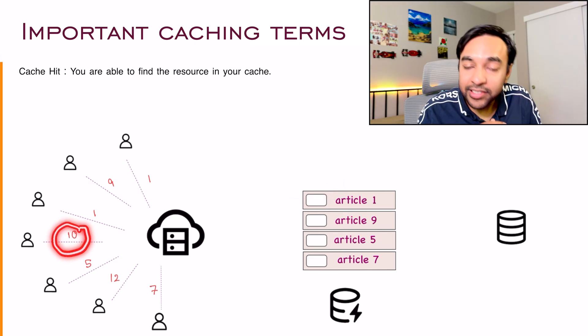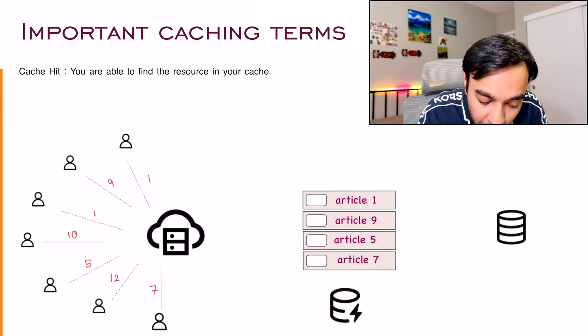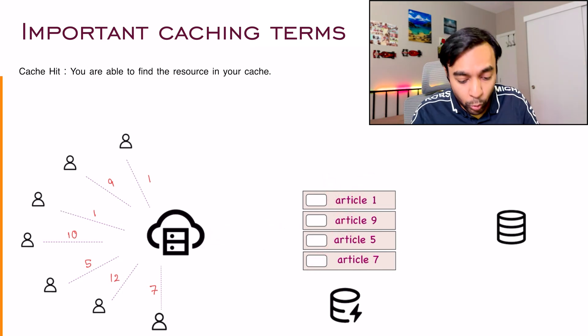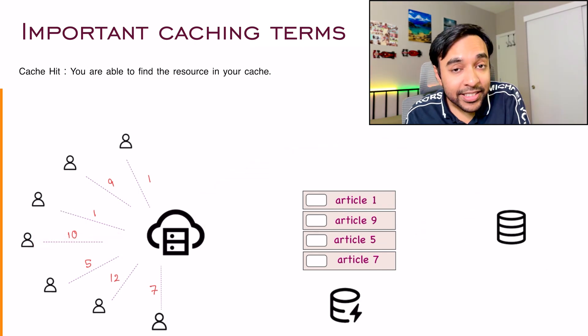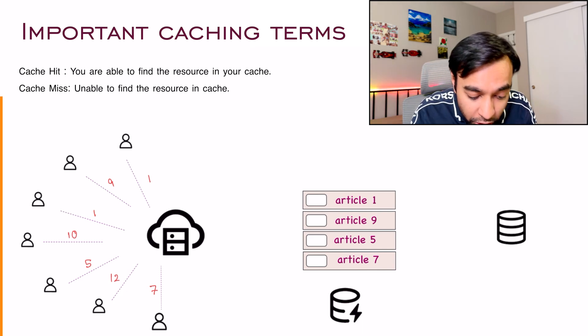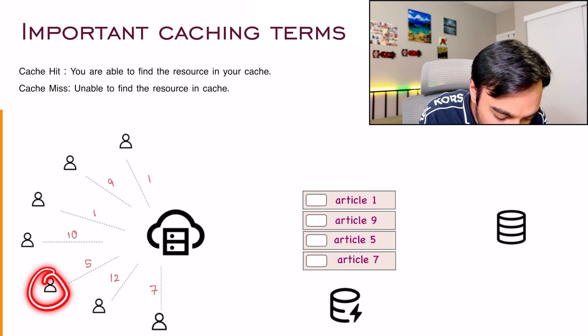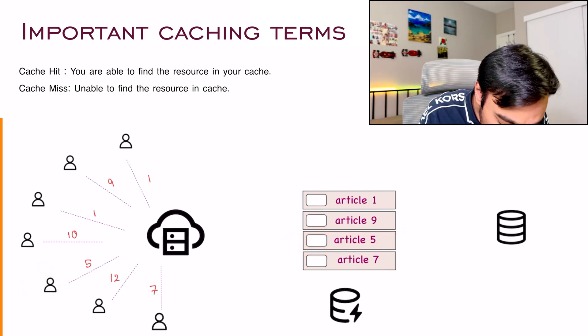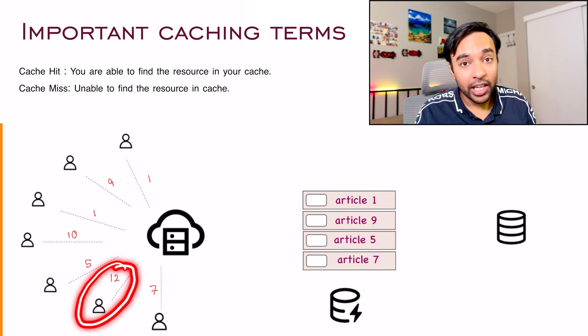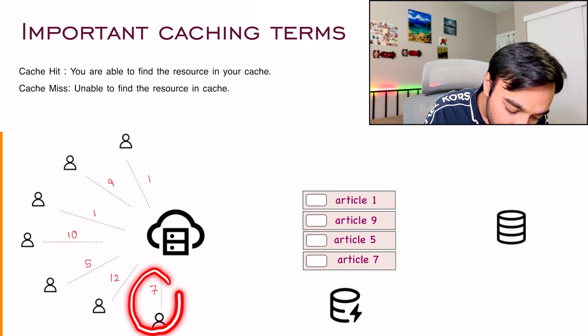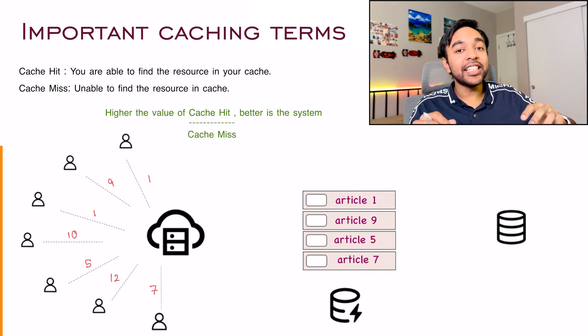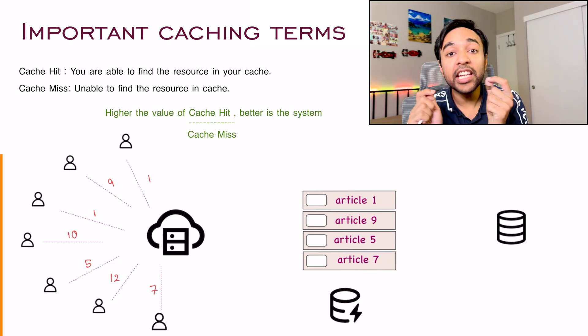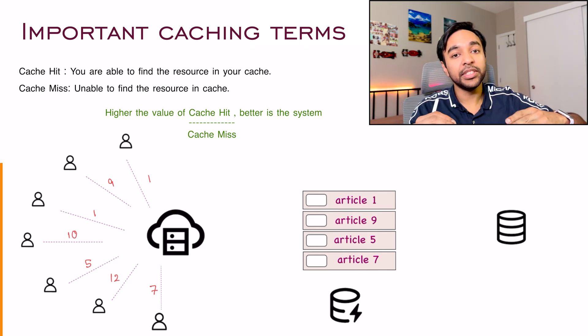The next user is asking for article 10. Again, you look in your cache, you cannot find the article 10 anywhere. So now what do you do? You will go and you will try to look in your main memory. This concept is known as cache miss, because you looked in your cache and you didn't find it over here. So once again, for this next user, it is requesting article five, a cache hit. This user is requesting article 12, a cache miss. And this user is requesting article seven. So once again, a cache hit. So you can say that a system is supposed to be good if it has a good cache hit to cache miss ratio. That means you are able to look up a lot of your requests in the cache. And that is good.